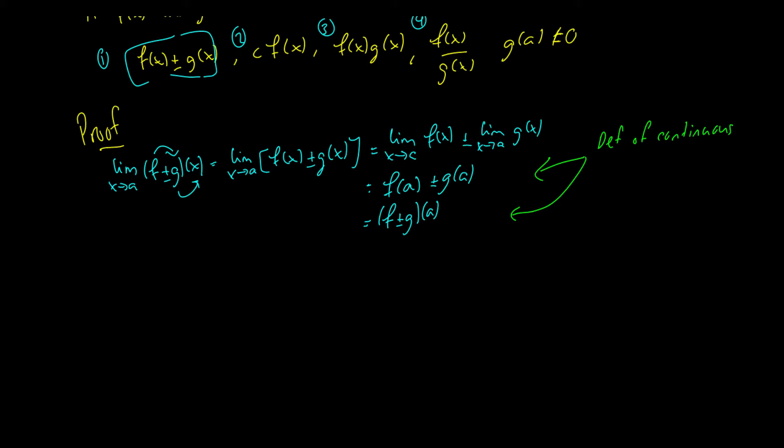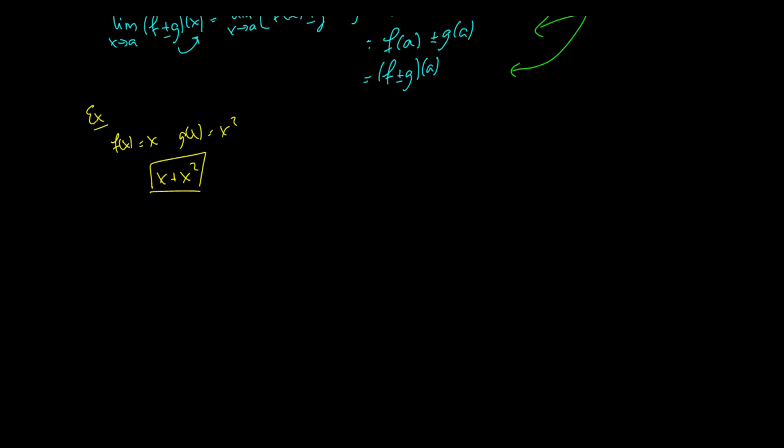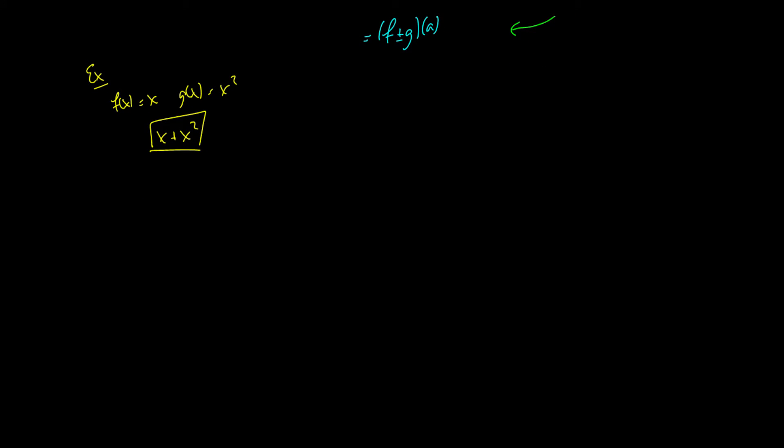So if we take a function like, let's say as an example, we take f(x) is equal to x and g(x) is equal to x squared, then x plus x squared is continuous at a if we have some point. And this can really be proven for any a you choose. Alright, so let's take a look at another theorem which is going to tie in with what we just saw in this example here.